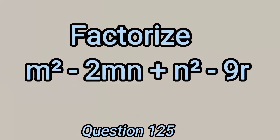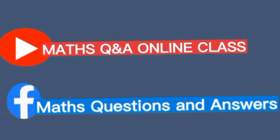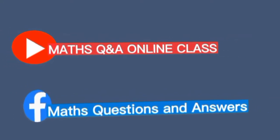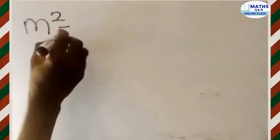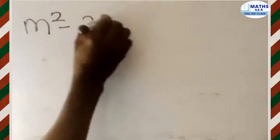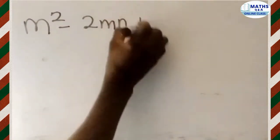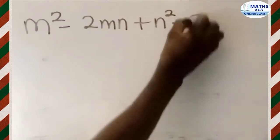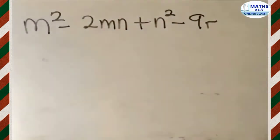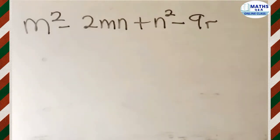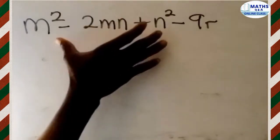Factorize M squared minus 2MN plus N squared minus 9R. We are given this algebraic expression and we are told to factorize it. To do that, we first have to focus on the first three terms.